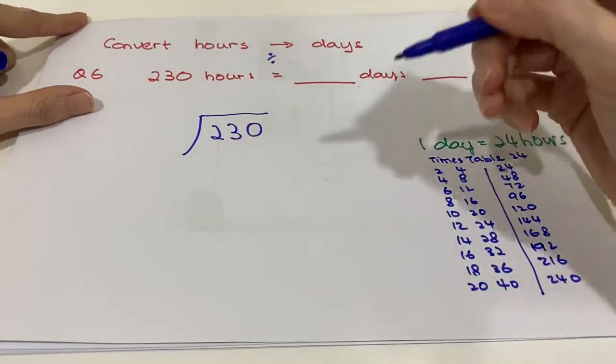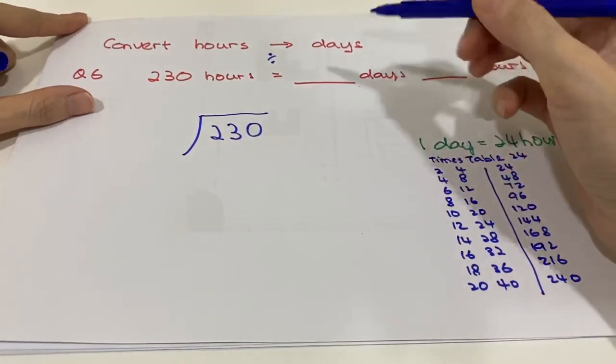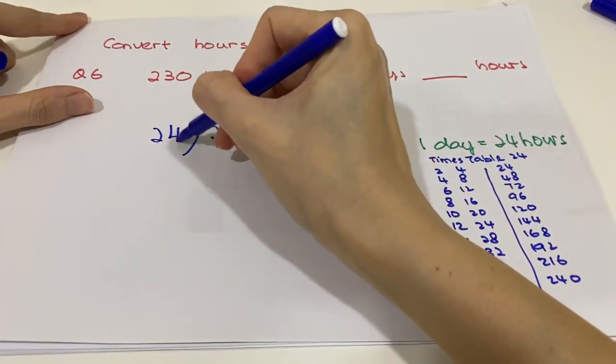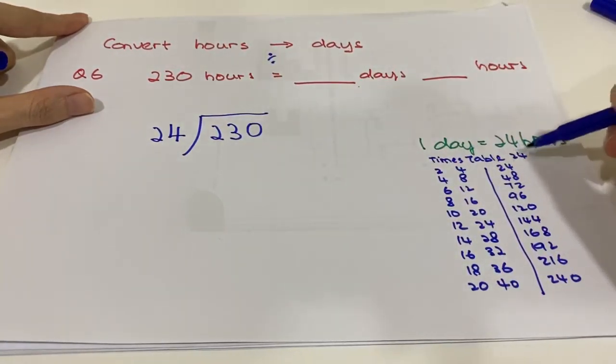This one, 230 divided by 24. Let's look at the times table 24 here.